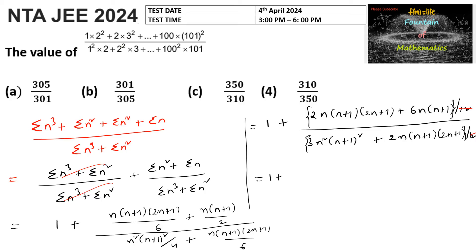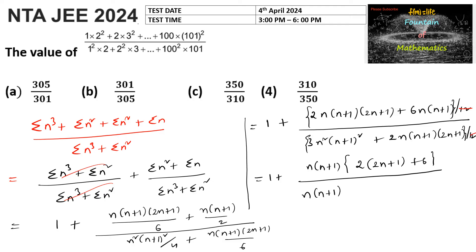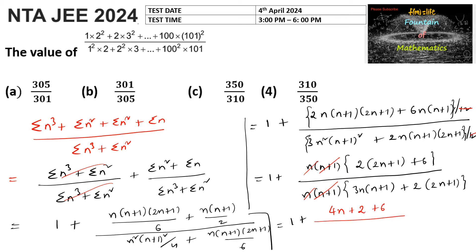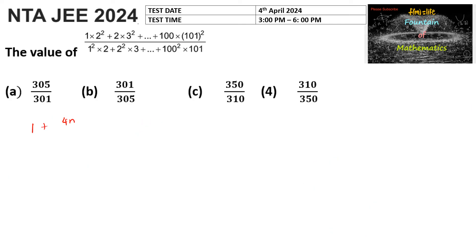Taking n·(n+1) common from numerator and denominator, we get 2·(2n+1) + 6 in the numerator and 3n·(n+1) + 2·(2n+1) in the denominator. Canceling n·(n+1), the numerator becomes 4n + 8 and denominator becomes 3n² + 7n + 2, so we write 1 + (4n+8)/(3n²+7n+2).